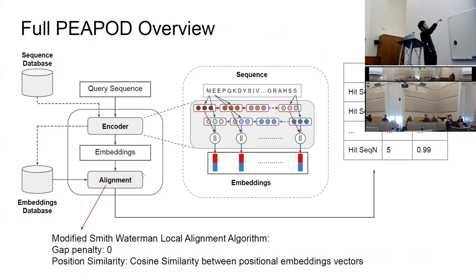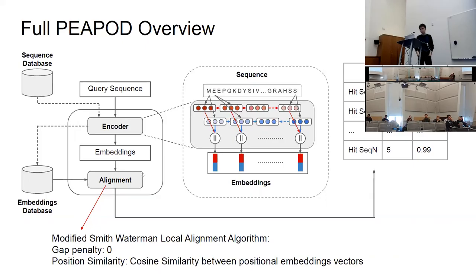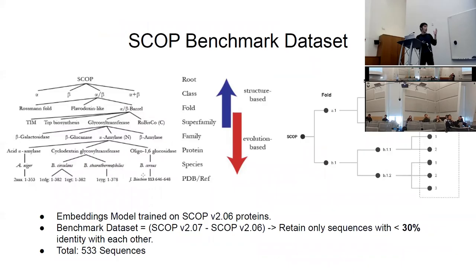Here's the full EPOD pipeline overview. There's the alignment tool that takes in a query sequence, and the encoder is the embeddings encoder we discussed. We tried both the original pretrained version and our fine-tuned version. What comes out is a list of hits with p-values, calculated by fitting a score distribution. For the alignment algorithm, we use the Smith-Waterman local alignment algorithm with a gap penalty of 0, and instead of +1/-1 match/mismatch scores, we use vector similarity.